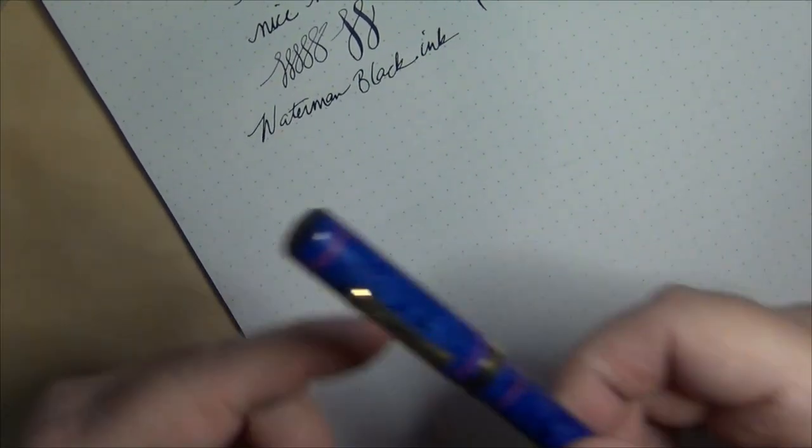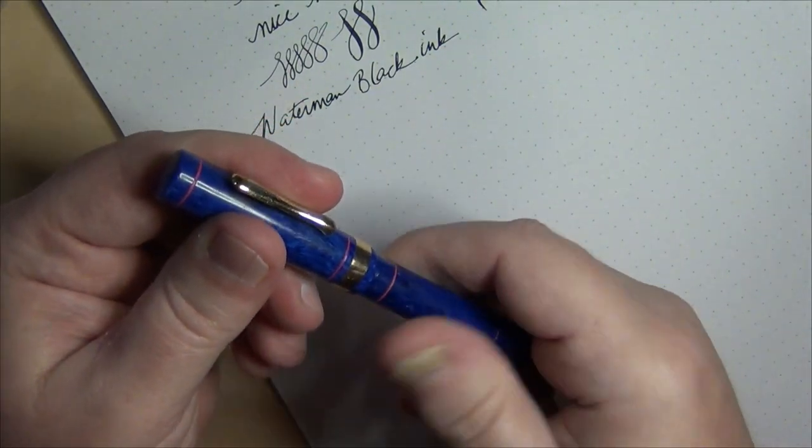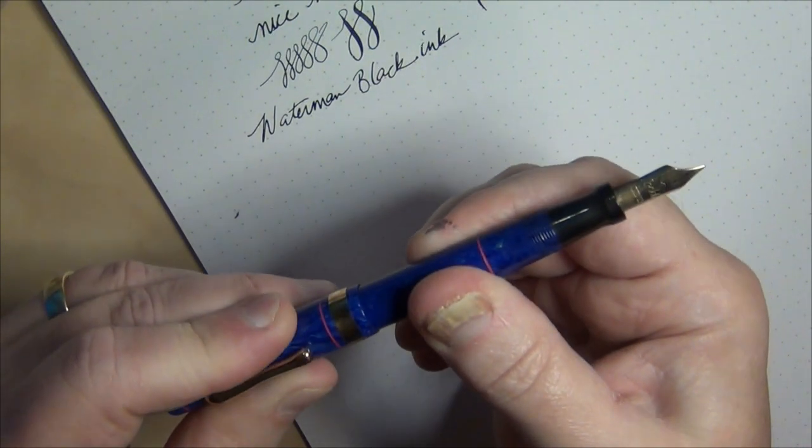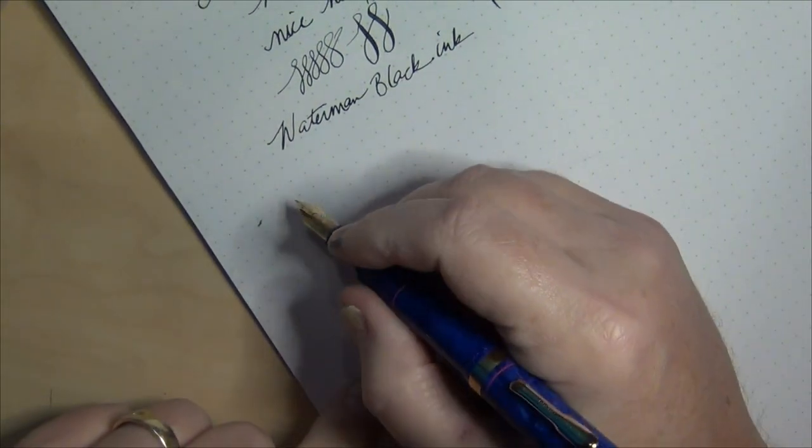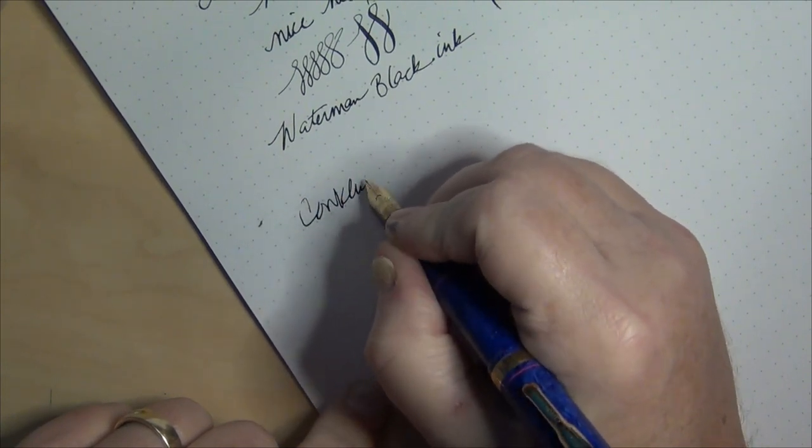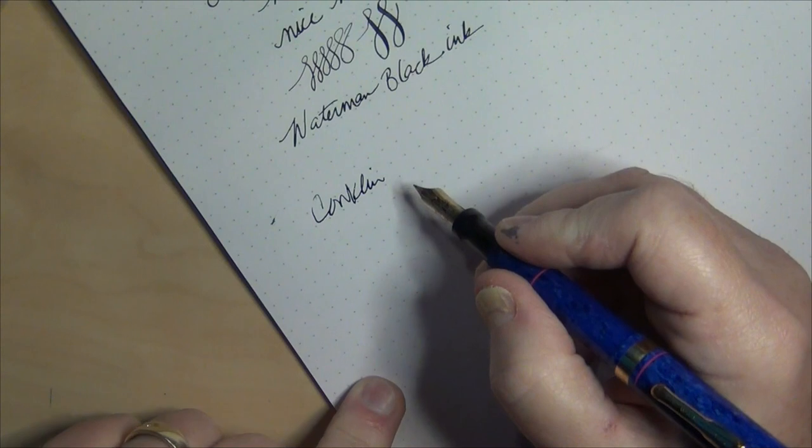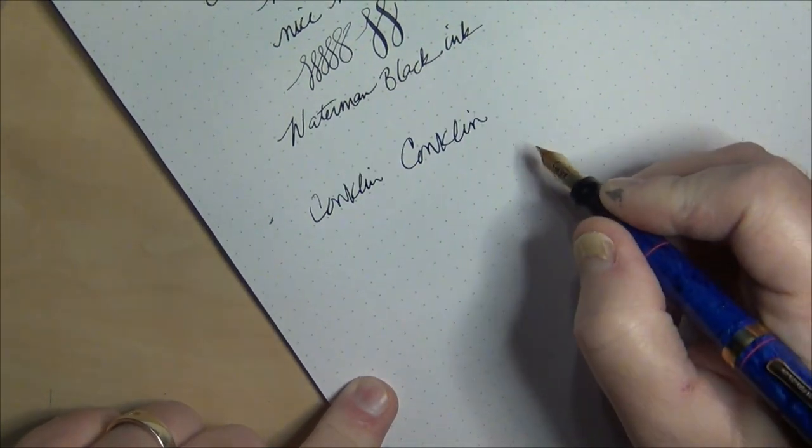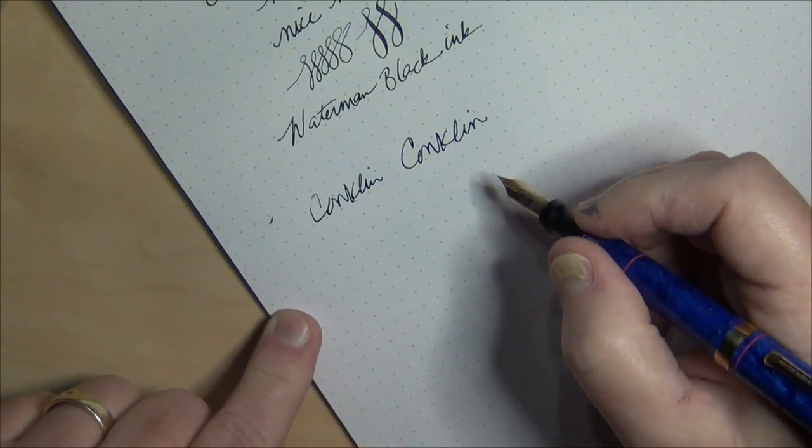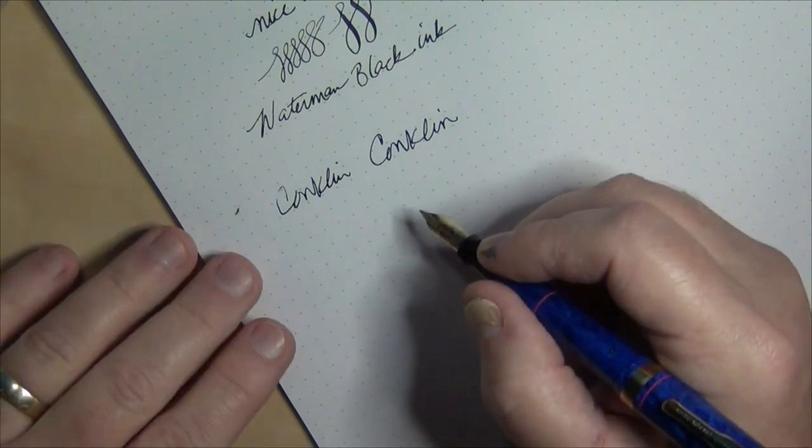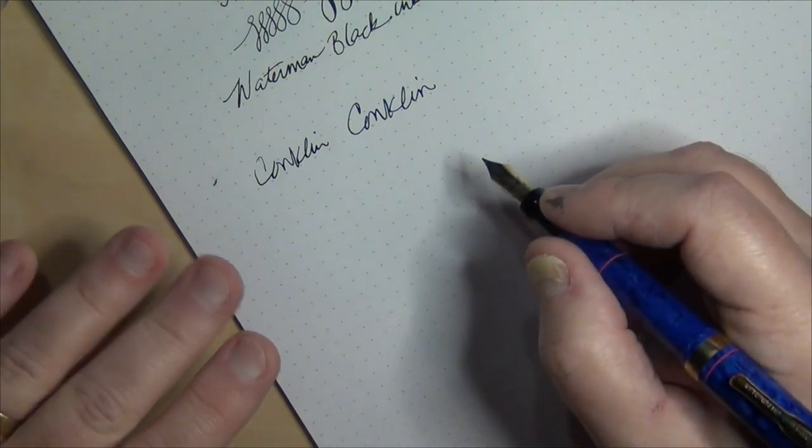But let's change up a little bit. Let's go to this Conklin Endura, not the full-size Endura but the little baby Endura as I call it. So let's go ahead and write. This one again I just filled it so it skipped a little bit at first. But like I said, I just filled it so I wasn't writing with it since I did the filling, because I wrote both of these pens out of ink and they were sitting on my little bin of pens to clean.